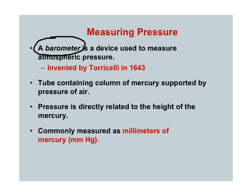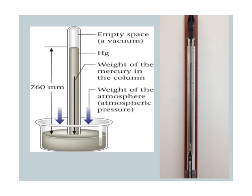A barometer is the way we test atmospheric pressure — you'll hear them talk about the barometer in the morning and what the atmospheric pressure is. It was invented by a gentleman named Torricelli, and that's important because we use his name — the 'Tor' part — as a unit for pressure. He developed this very simple instrument to measure atmospheric pressure, which is helpful because as pressures change, you can tell that the weather is about to change. He did this with just a tube containing mercury, and the atmosphere pushes down on it. It's measured in millimeters of mercury.